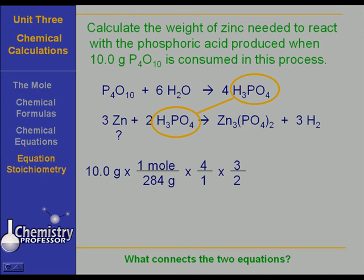That four in front of the phosphoric acid in the first equation and the two in front of the phosphoric acid in the second equation are numbers that are unique to the specific equations. Don't try to set up a relationship between those two. The relationship is they are identical.